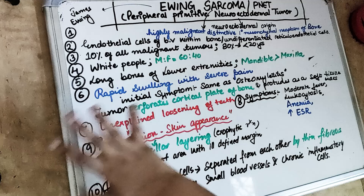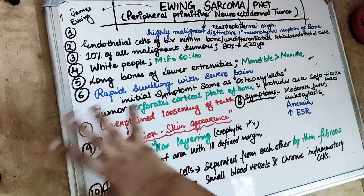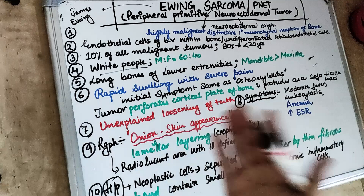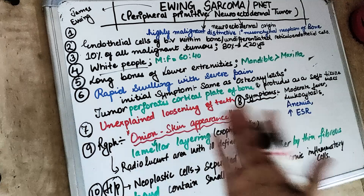Ewing Sarcoma accounts for 10% of all malignant tumours of bone, and 80% of the time it is seen in patients below 20 years of age.